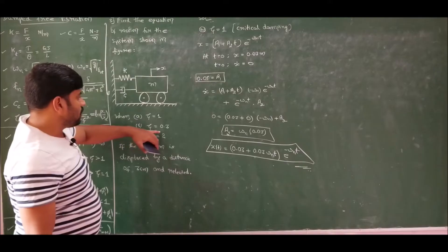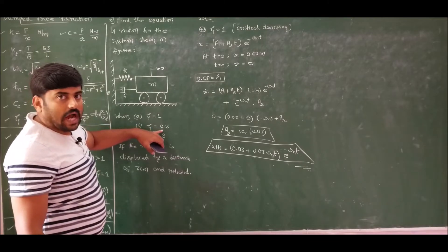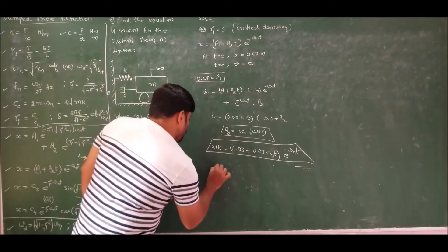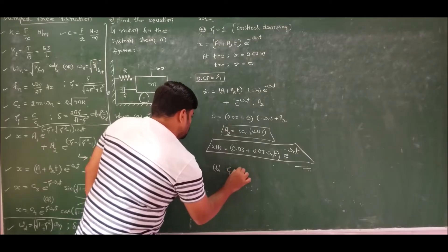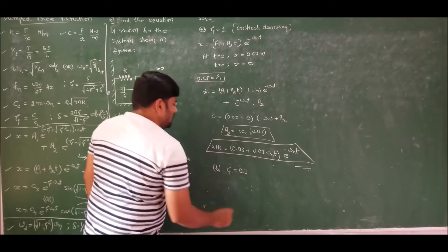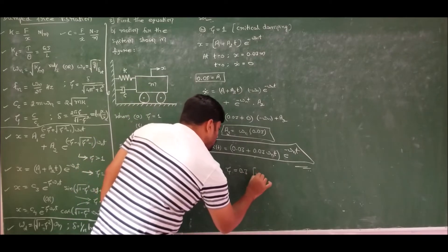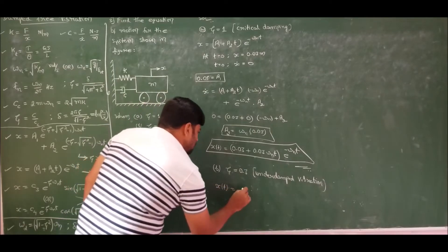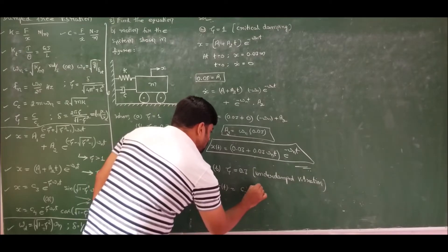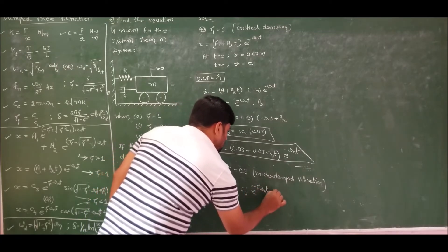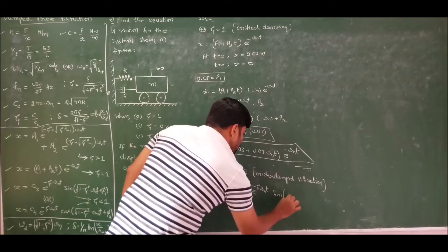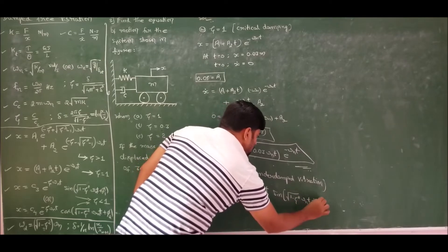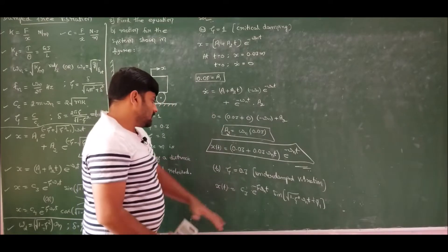Moving ahead to case B, when zeta = 0.3. Since zeta is less than 1, this is a case of under-damped vibration. For under-damped vibration, the system response is: x = c3·e^(−ζ·ωn·t)·sin(√(1−ζ²)·ωn·t + φ1). The constants to find are c3 and φ1.